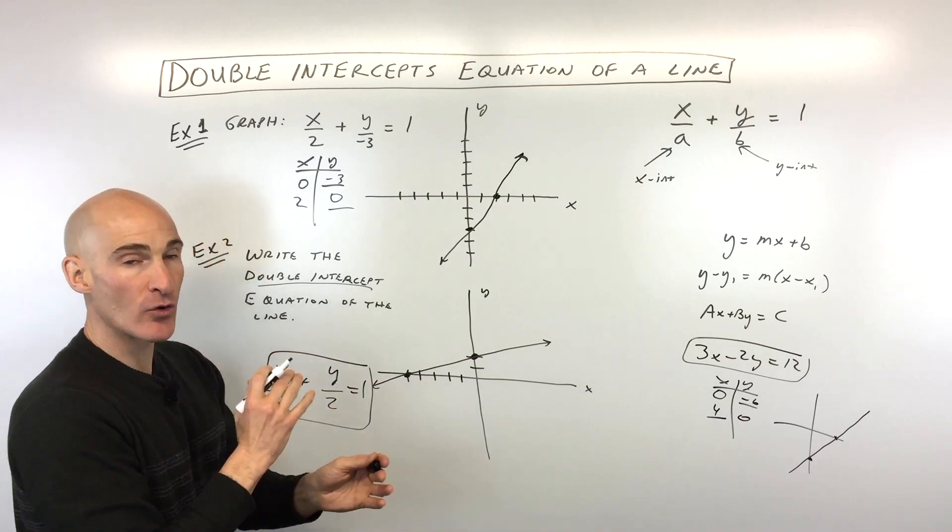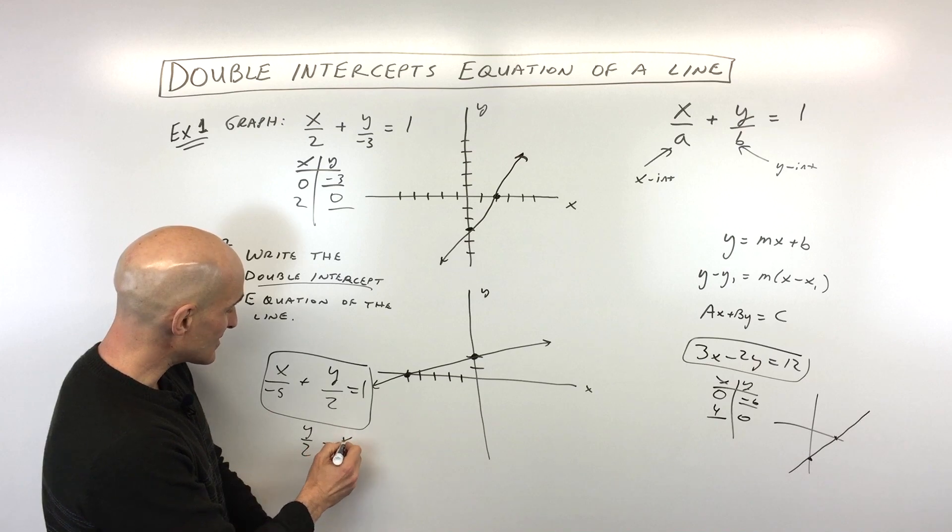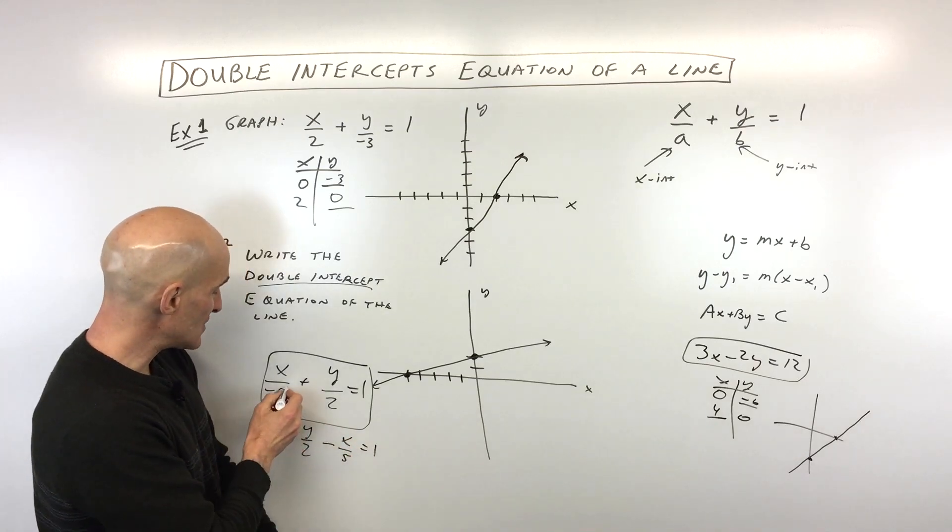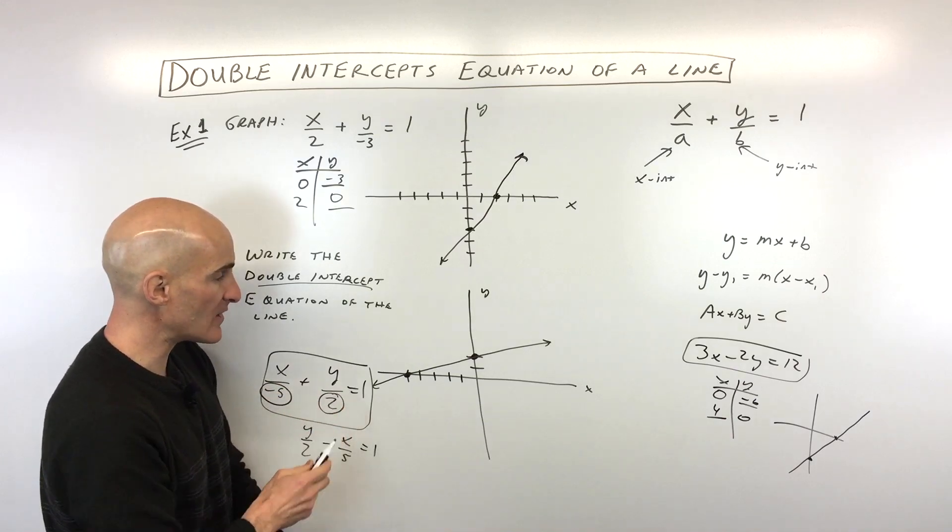Now, if you wanted to, you could rewrite this a little bit. You could say y over 2 minus x over 5. That's another way to do it. But basically, you can see whatever's underneath the x is the x-intercept and whatever is underneath the y is the y-intercept.